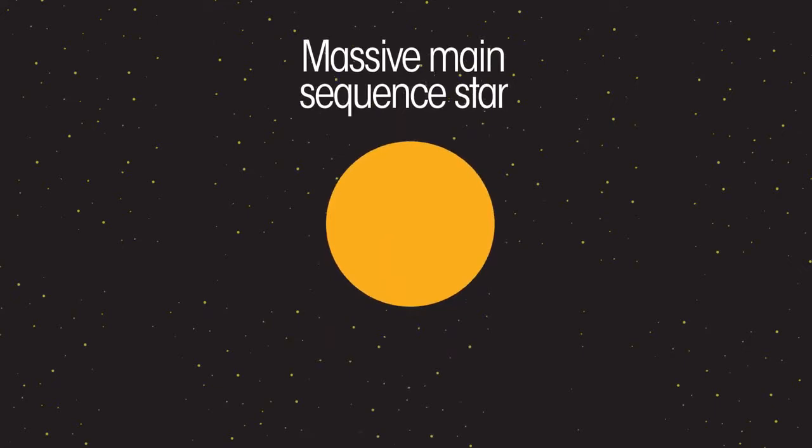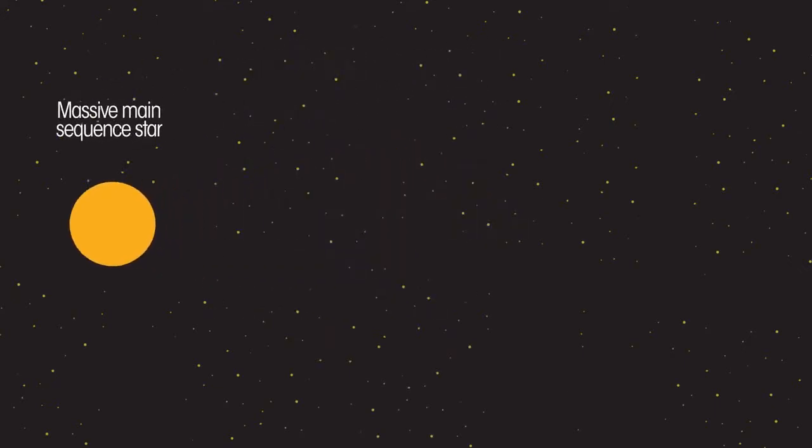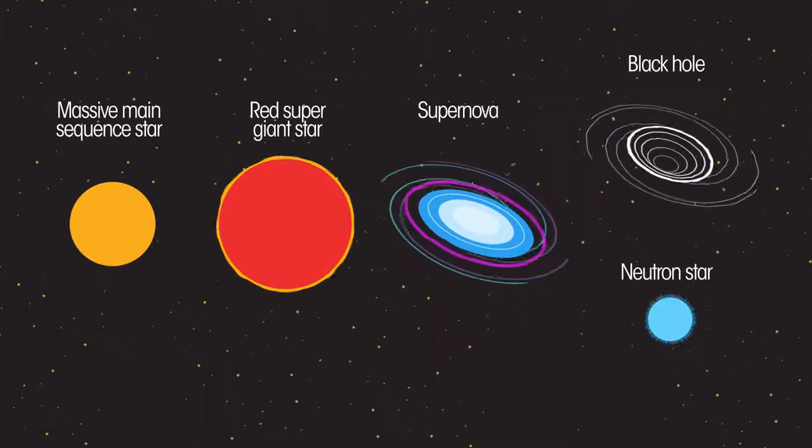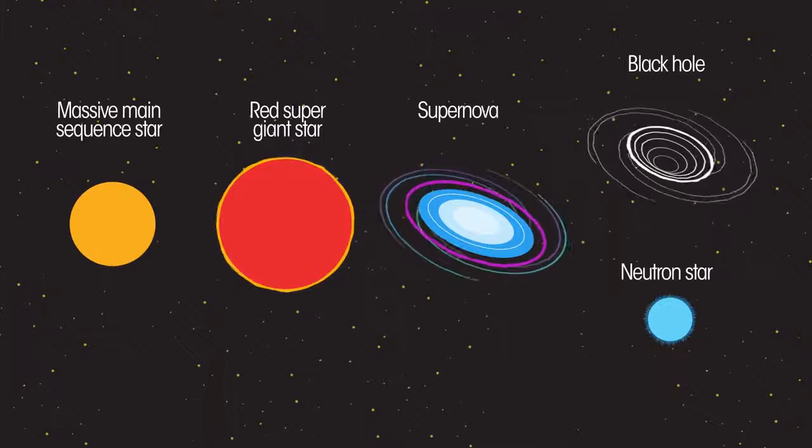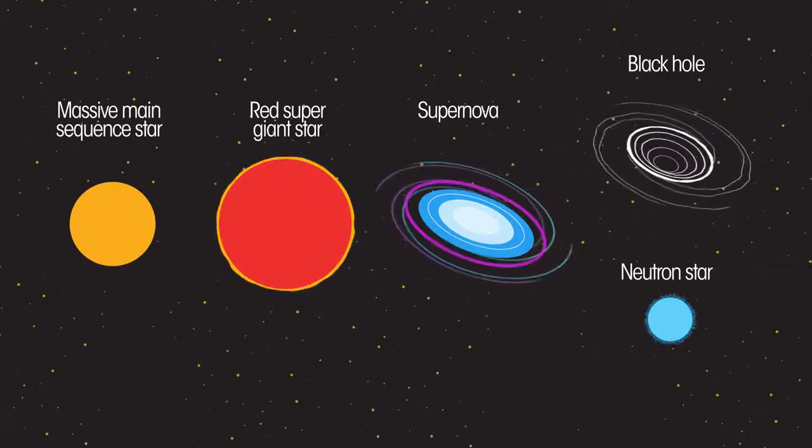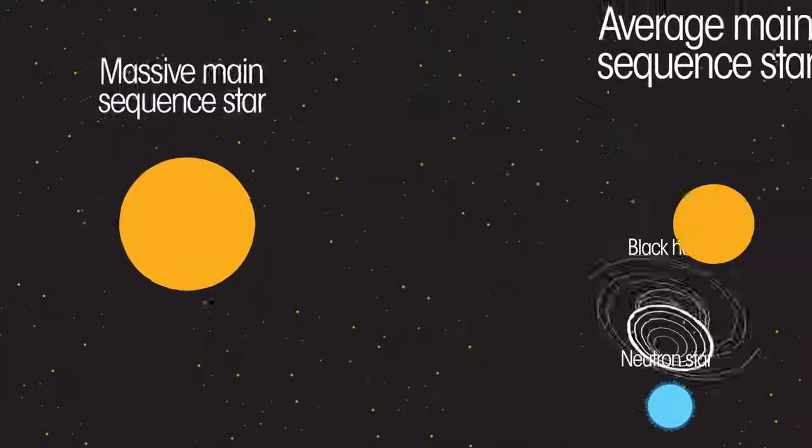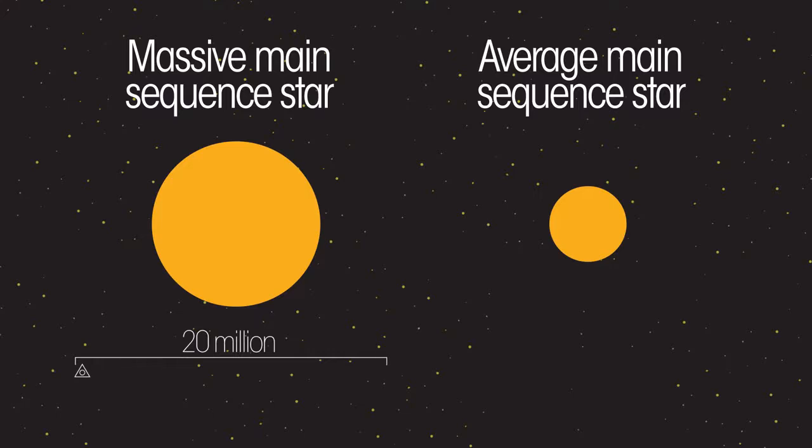So what about bigger stars? What happens to them? They follow a different pattern. These stars too eventually run out of hydrogen, but quicker than a smaller star would. Massive stars as a result have a much shorter main sequence life than smaller stars.